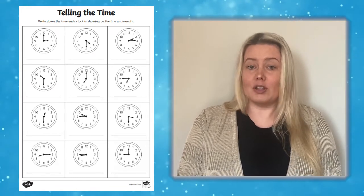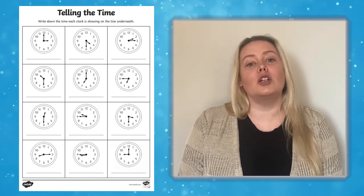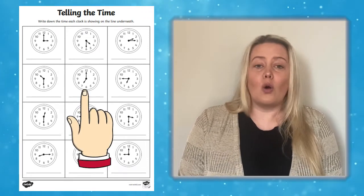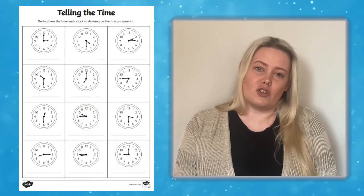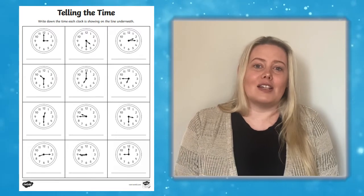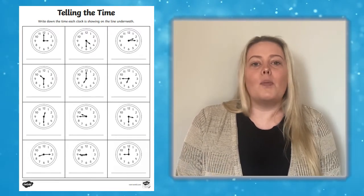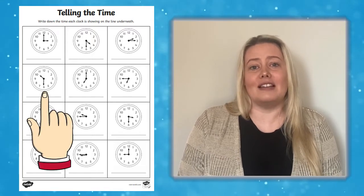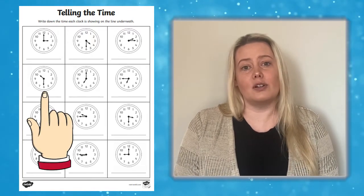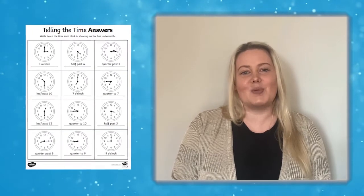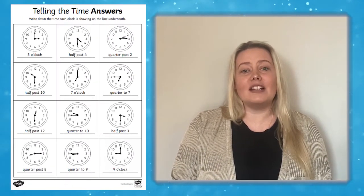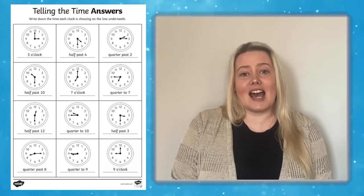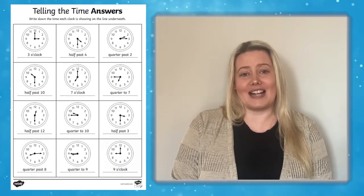For example, you could ask them to point to the clock which shows seven o'clock, or you could make this a little bit tricky by using phrases such as 'point to the clock which shows the time that is half an hour later than ten o'clock.' A handy answer sheet is provided with this activity so you can quickly and easily check learners' understanding and spot any times that might need a little bit more practice.